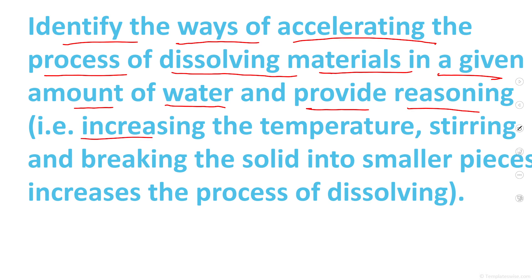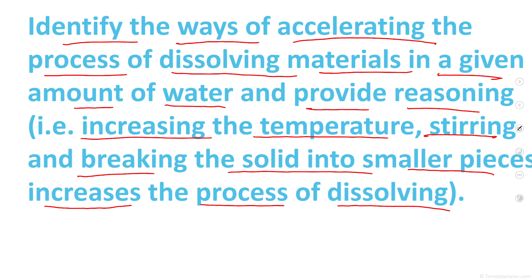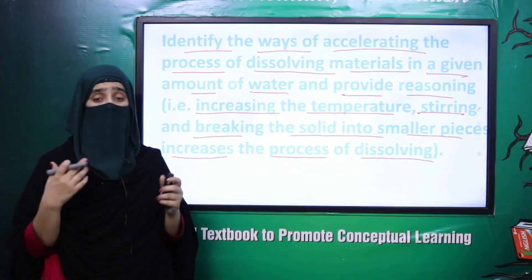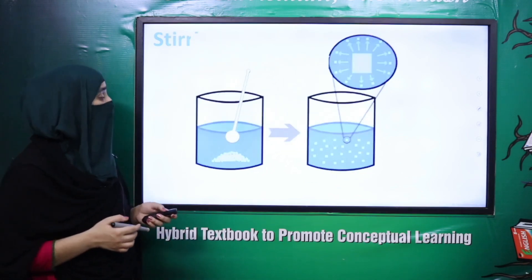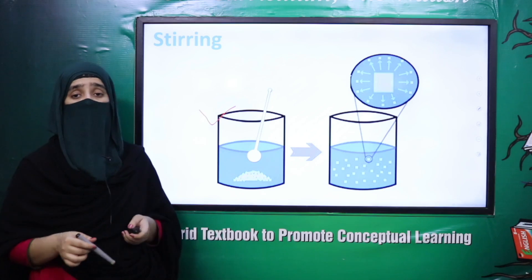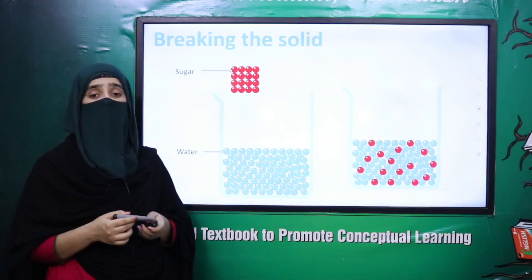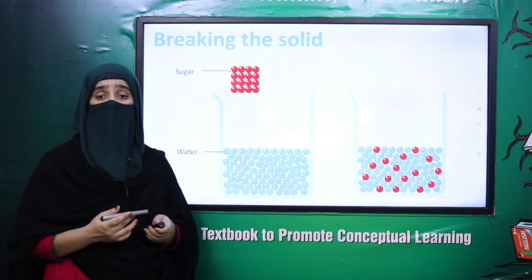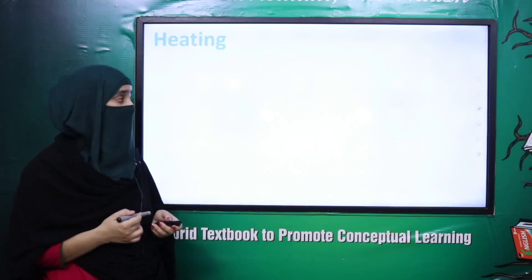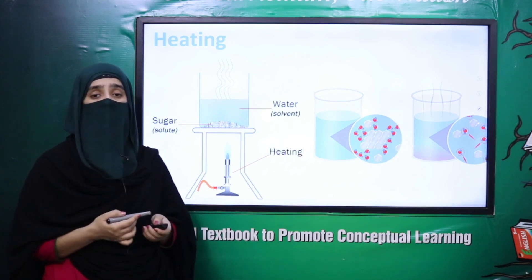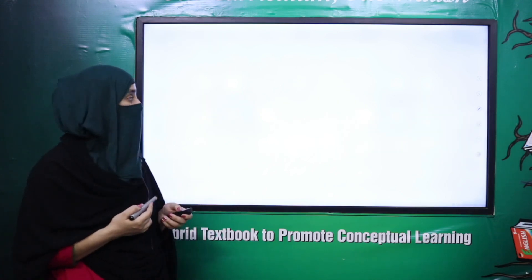Increasing the temperature, stirring, and breaking the solid into smaller pieces increases the process of dissolving. Iske baad hainne teen tariqe dekhay — by heating, by breaking the solid, or by stirring — hainne kis tarah se increase kar sakte hain solubility of solute. Stirring mein hainne dekha kis tarah se mix karne se solute ki solubility increase hoti hai. Iske baad hainne dekha kis tarah se heating karne se particles ki movement tez ho jaati hai aur unki solubility increase ho jaati hai rather than in cold solvent.